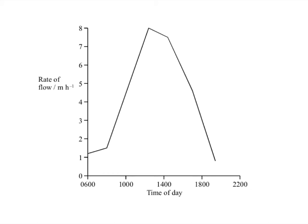This shows the type of results you could get from using a potometer. The time of day was varied and the rate of flow in the plant was measured as the distance the water moved per hour. You can see a rapid increase from about 8 o'clock in the morning, a slight decrease around midday, and then a steep decrease between about 2 o'clock and 8 o'clock in the evening.